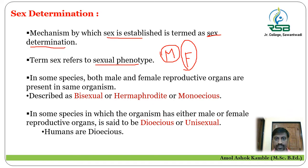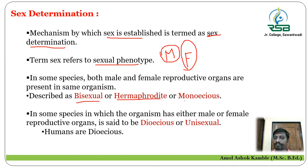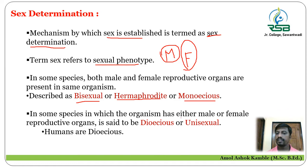In some species, male and female organs are present on the same organism, and they are described as bisexual, hermaphrodite, or monoecious organisms. Both the sexes are present on the same organism. While in some species, it consists of either male or female.